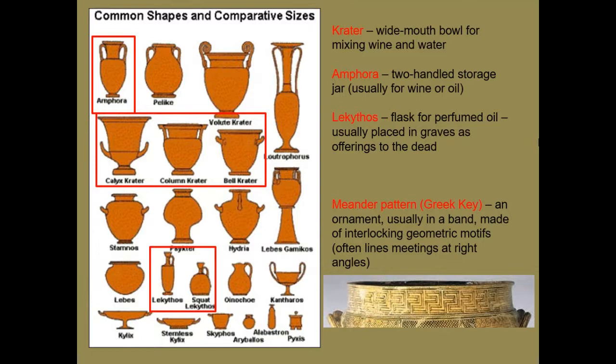The amphora tends to have a narrower mouth and the crater a much wider mouth. The lekythos vase types are used for storage and pouring of oils, often perfumed oils. The kylix is a drinking vessel — you would use your thumbs through the loops on the sides and tip this shallow bowl-like structure toward yourself to drink. The ones we'll see most frequently will be the amphoras, craters, and lekythoi.